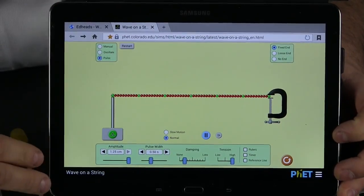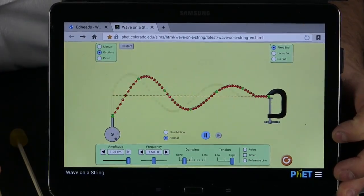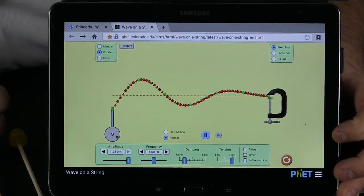The other thing we can do if we wanted these waves to come automatically is we can hit this button up here and the machine makes the waves come automatically.